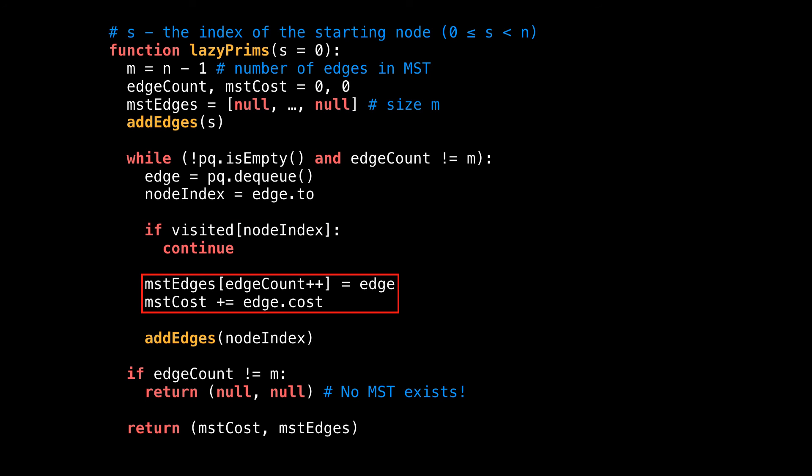Next, actually add the edge to the minimum spanning tree by adding it to the MST edges array, and while adding the edge to the tree, also sum over the edge costs. The last thing we want to do is call the add edges method with the new current node. Recall that this will add all the outgoing edges pointing to unvisited nodes to the priority queue. And the very last thing is we make sure that we have actually found a minimum spanning tree that spans the entire graph, and we return the edges along with the MST costs. And guys, that's all for the lazy implementation.